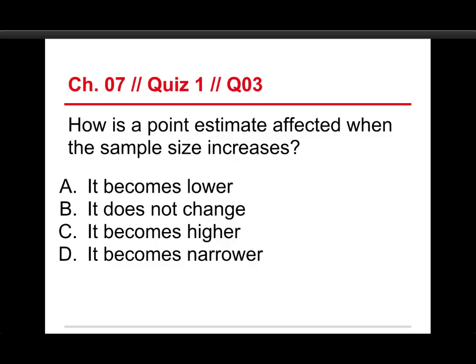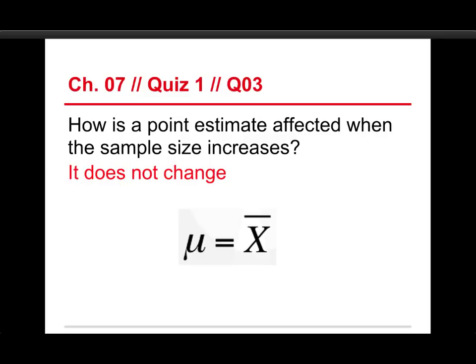Number three, how is a point estimate affected when the sample size increases? So, it becomes lower, it does not change, it becomes higher, or it becomes narrower. Well, a point estimate doesn't change according to the sample size, so it's B. It's just an infinitely narrow little thing and it just stays right where it is. It doesn't become lower, that doesn't affect it at all. It doesn't become higher, that's irrelevant. And it doesn't become narrower. That's something that happens to confidence intervals as the sample size increases because it shrinks the standard error, but it has no effect on the point estimate. And you can see, here's the formula. There's nothing to it. N doesn't work into this. And so, it doesn't change.